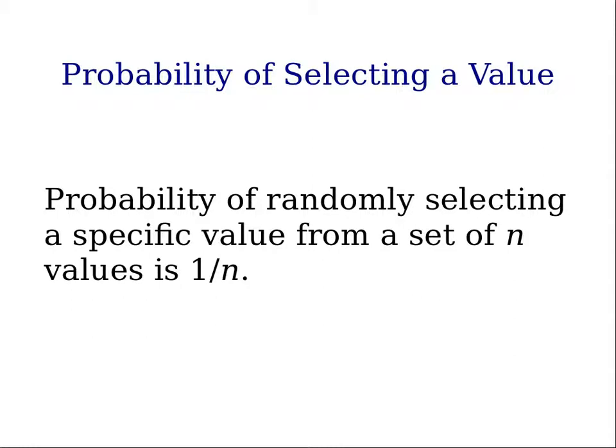If we have a set of n values, or n items, and we randomly select one of those from that set, then the probability of selecting a specific value is 1 divided by n.